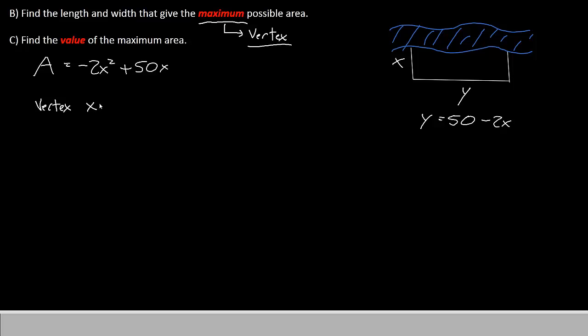So to find the vertex, we'll have to say x is equal to negative b over 2a. Recall that b is the number next to x, and a is the number next to x squared. So our x will equal negative 50 divided by 2 times negative 2. If we do the operations, we'll have negative 50 divided by negative 4. And if you divide those, you'll get 12.5.